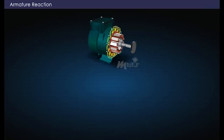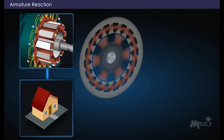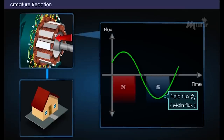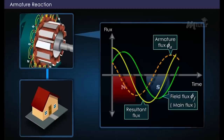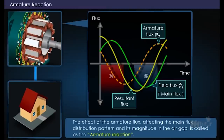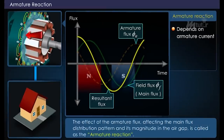When a load is connected to an alternator, the armature carries a current and thus produces a magnetic field around it. Thus the air gap contains two fluxes: one due to the field winding, known as the main flux phi_f, and the other due to the current-carrying armature, phi_a. The resultant flux pattern in the air gap is changed due to the interaction of the armature flux on the main flux.